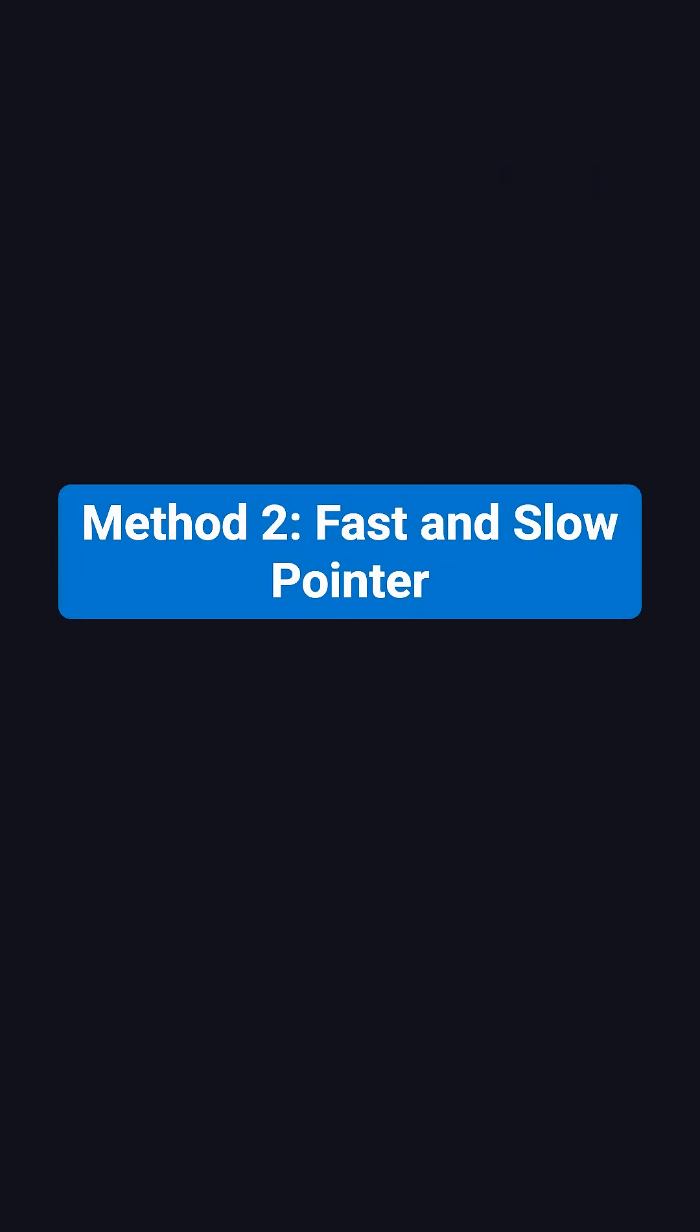There's actually a more elegant way, using the fast and slow pointer method. This technique not only detects whether a cycle exists, but also finds the exact starting node, using only O(1) space.